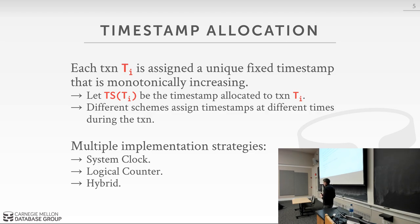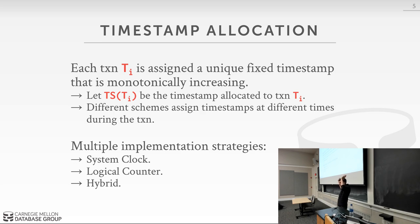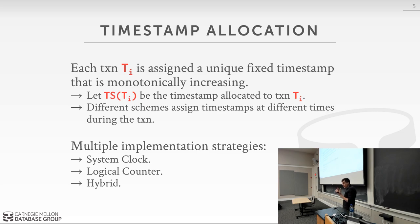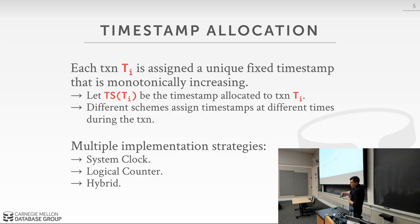One problem with a logical counter is overflow — a 32-bit timestamp will roll back to zero after hitting 2^32 - 1, making transactions appear to be in the past when they're really in the future. Another issue in distributed systems is keeping counters synchronized across machines, which gets expensive. The most typical approach is a hybrid clock combining a physical system clock and a logical counter. Postgres uses a logical counter and has this wraparound issue, which we'll discuss next time.